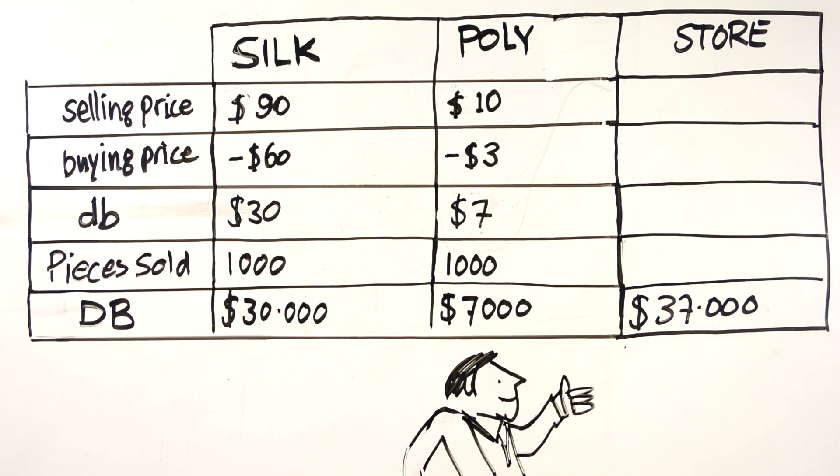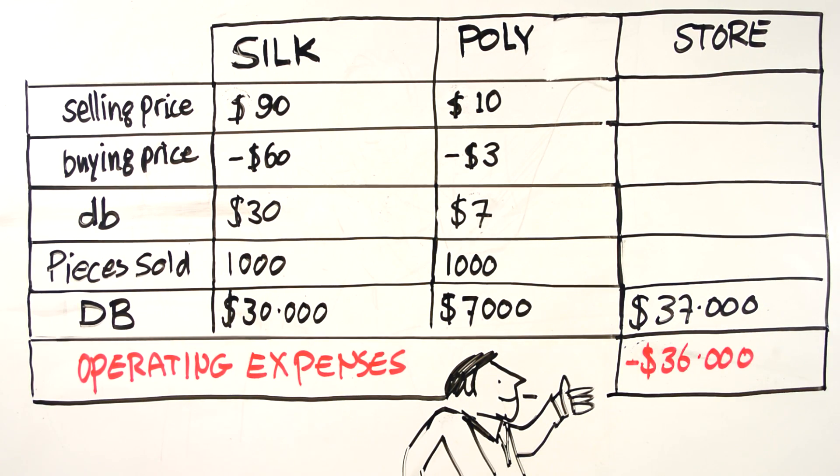If operating expenses are $36,000, then earnings in this case are $1,000.